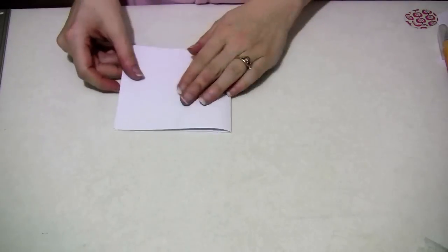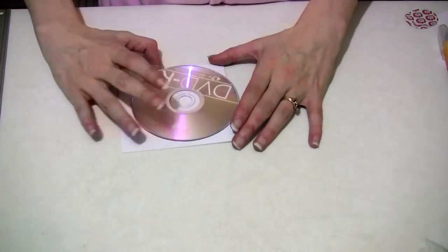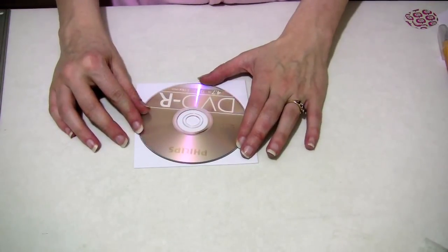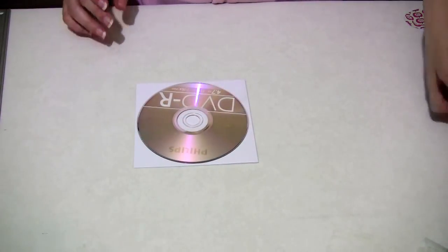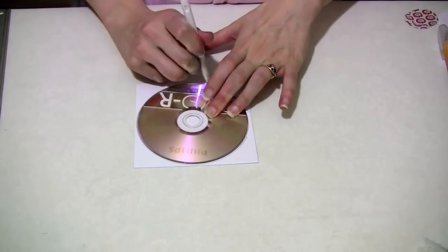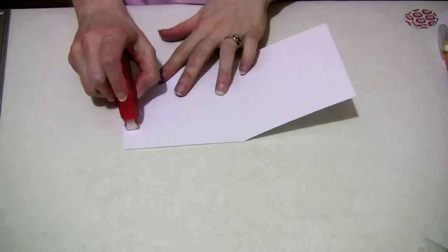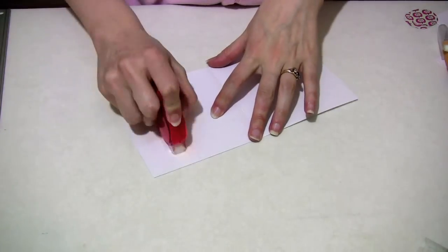So let's make the pram itself. I'm going to actually use another square card blank and I'm going to take a CD and use this as a template for the pram, so just going to trace around the outside to get that perfect circle.